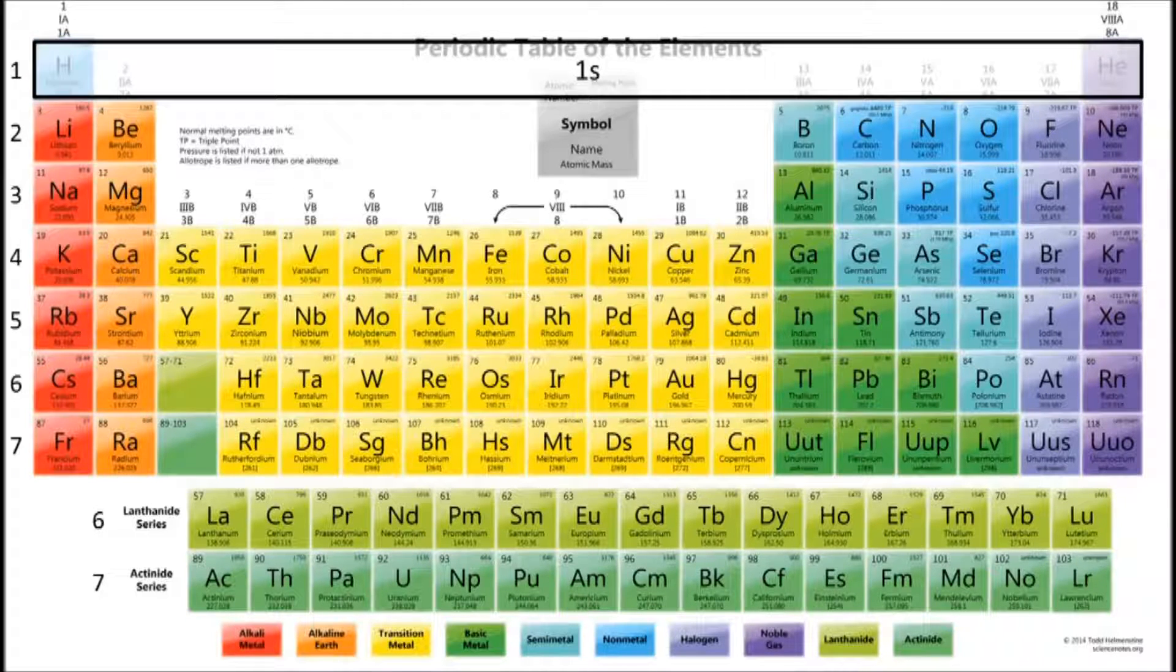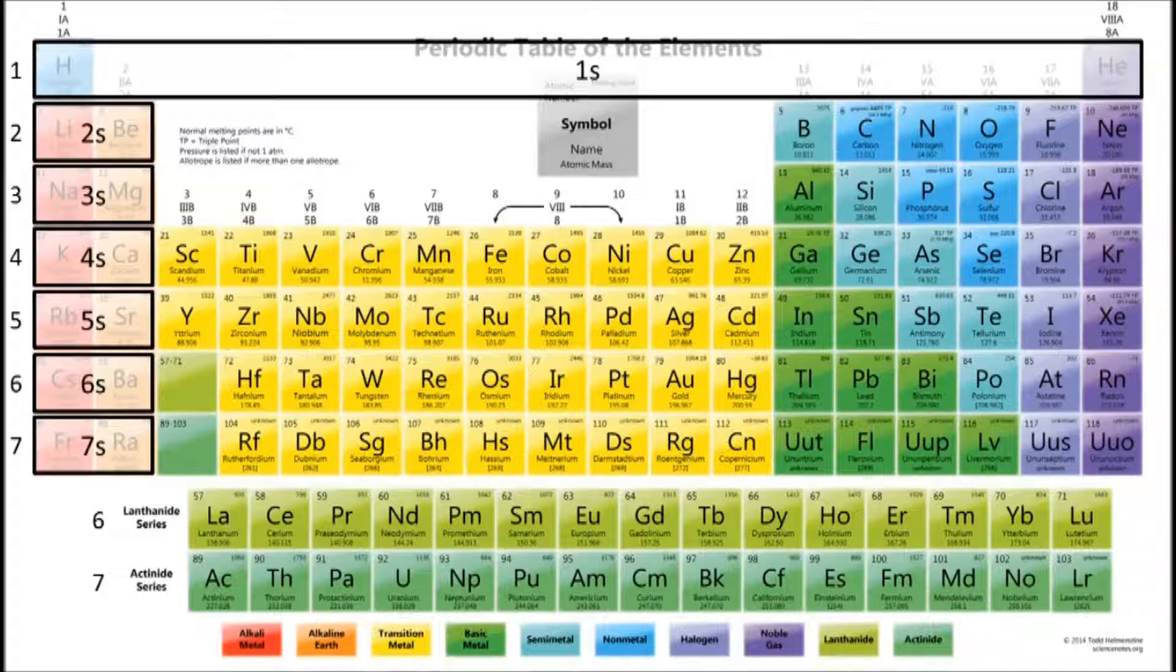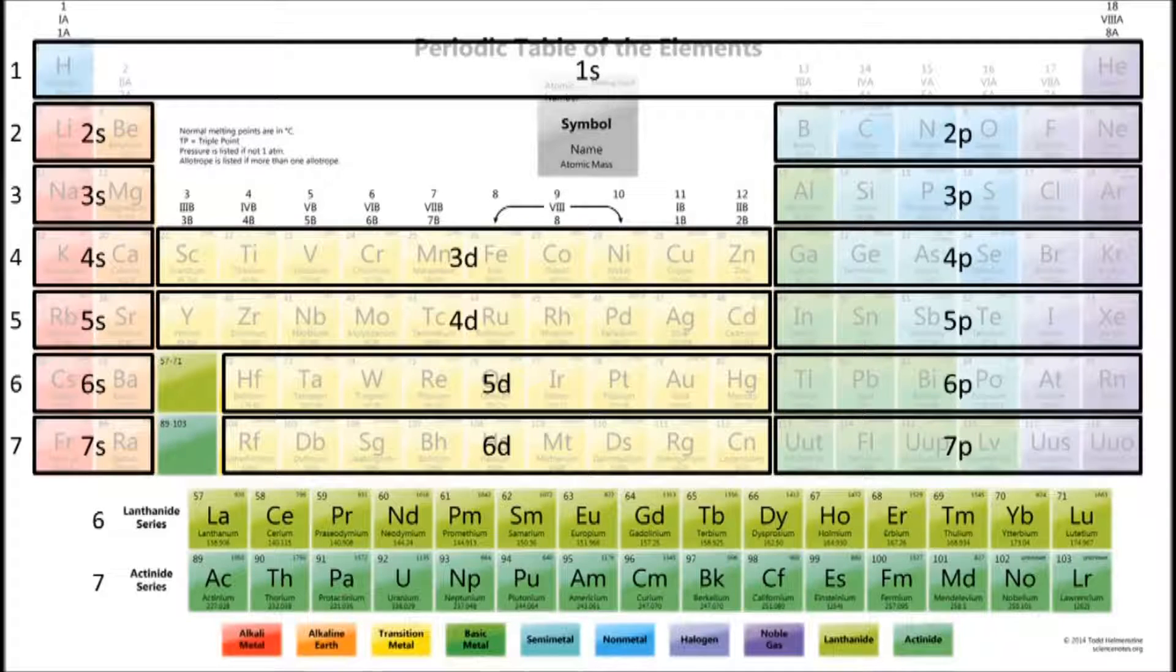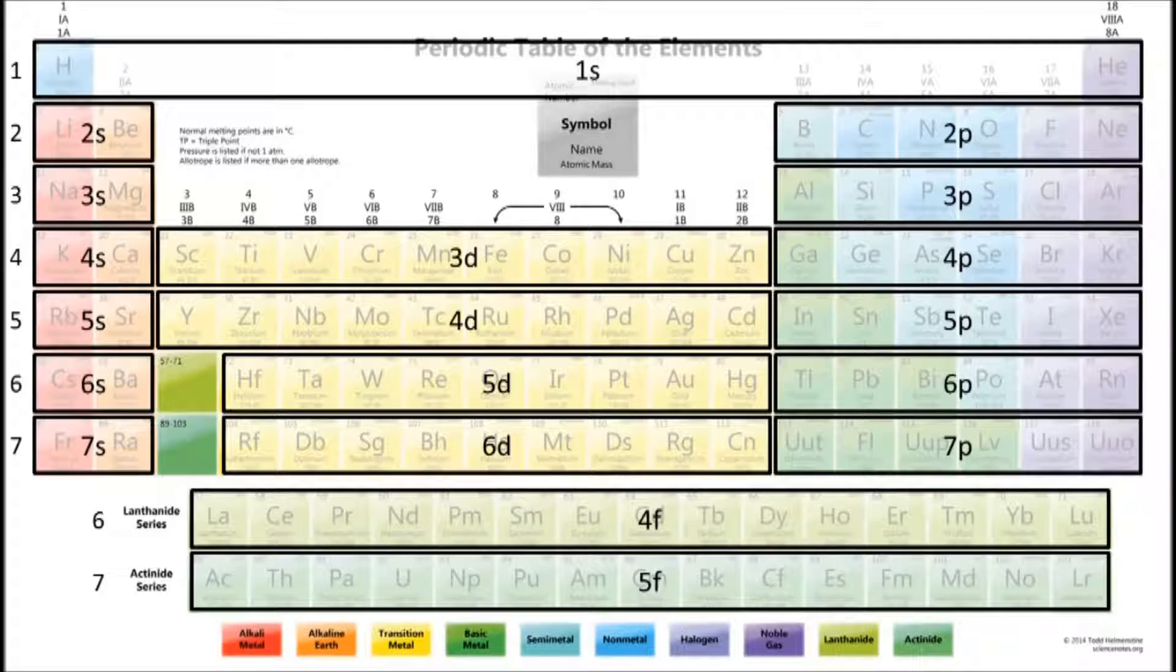Hydrogen and helium occupy 1s, the first two columns occupy ns, the last six columns occupy np, the transition elements occupy n-1d, and the lanthanides and actinides occupy 4f and 5f respectively, or n-2f. This is where the periodic table currently ends.